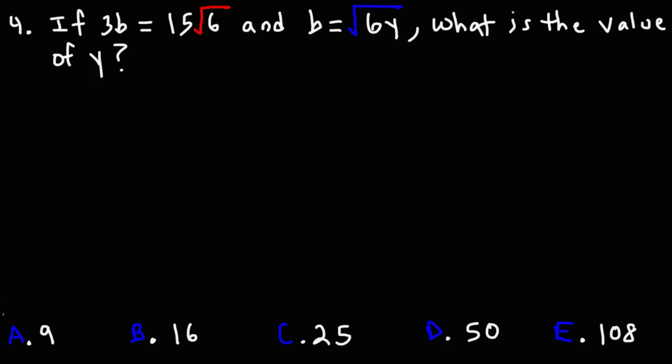Well, we have two equations and two variables, so we can solve for Y. What I'm going to do is, I'm going to start with this expression. 3B is equal to 3B. Because they're the same, they equal each other. On the left side, I'm going to replace 3B with 15 square root 6. On the right side, I'm going to write it as 3 times B. Now, I'm going to replace this B with what it's equal to. So, we have 15 square root 6 is equal to 3 times the square root of 6Y.